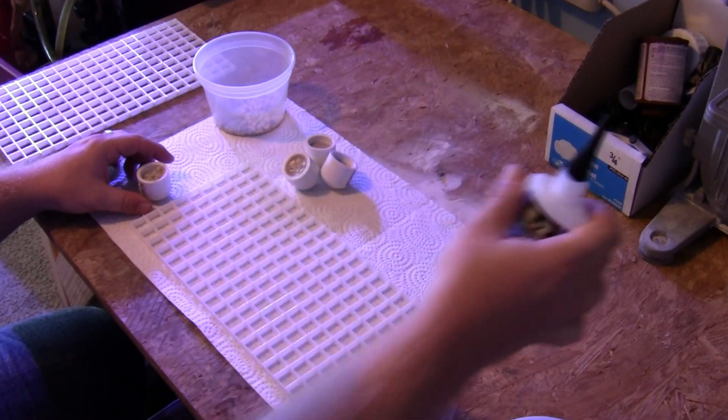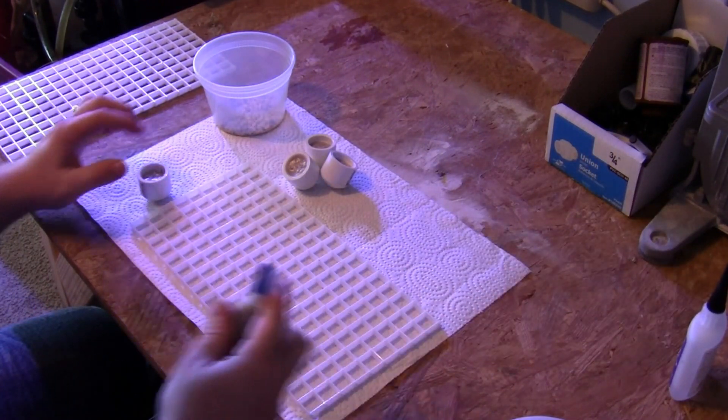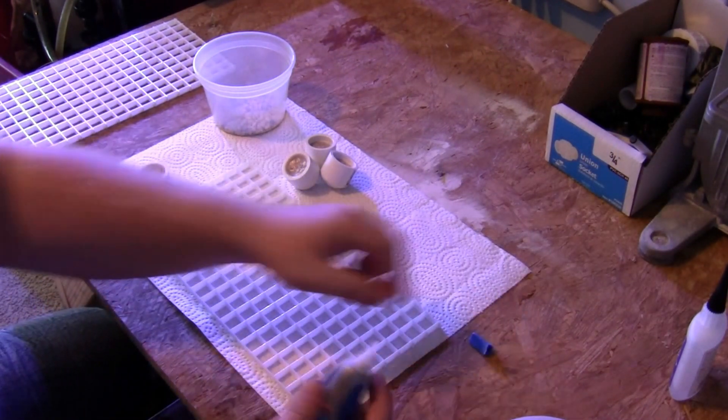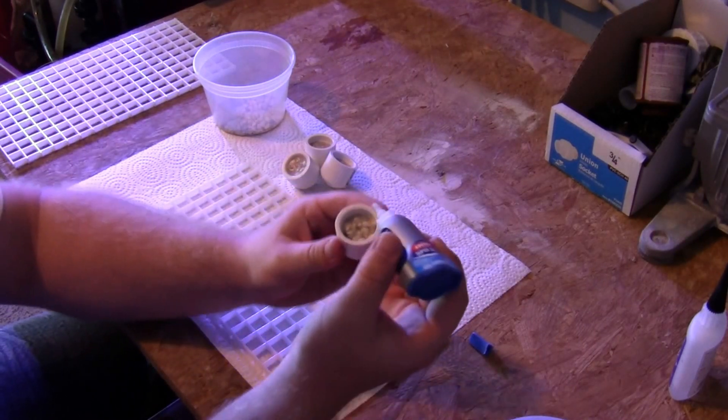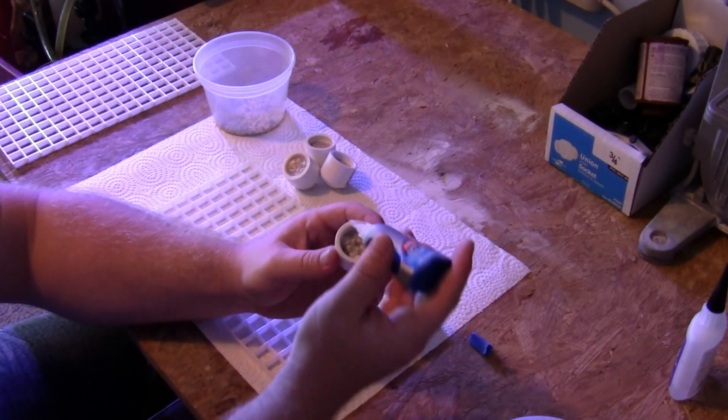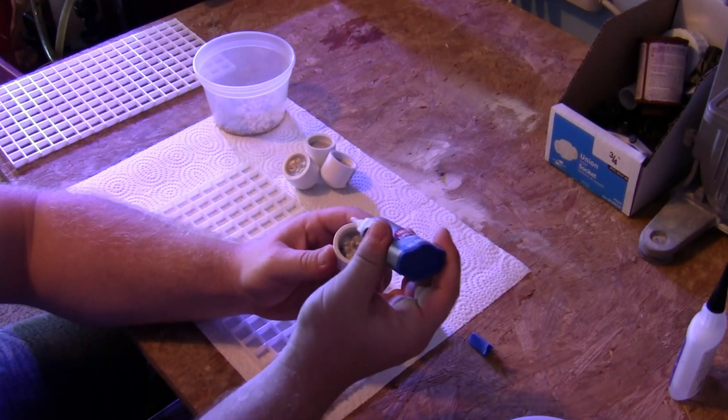So here we go. You can put a ring all the way around the rim of the feet. Or to save glue you can just put it on four places to match with where it will actually come in contact with the frag rack.